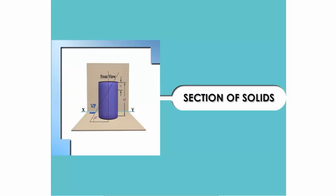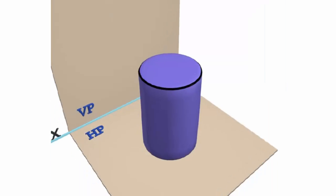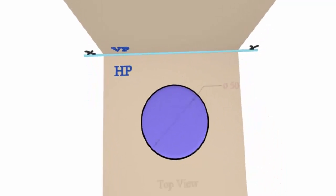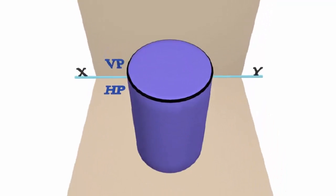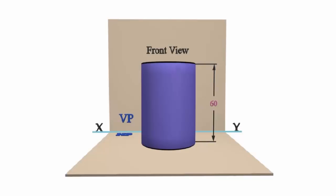Example Problem. In this problem, a cylinder of base diameter 50 mm and axis height 60 mm is resting on the ground on its base.